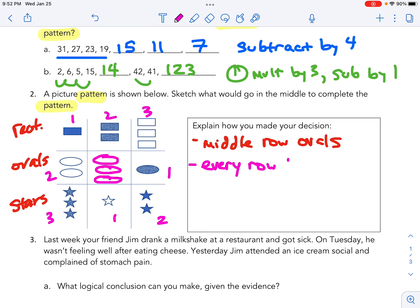Every row has either one, two, or three of the shapes.